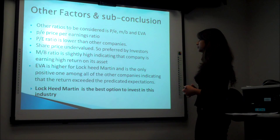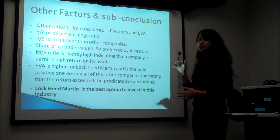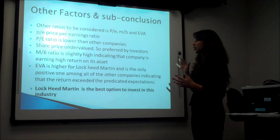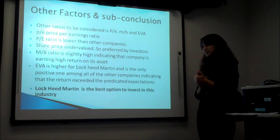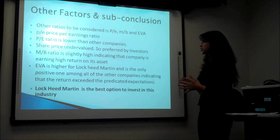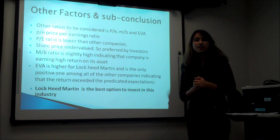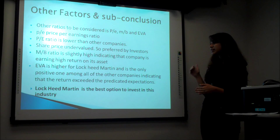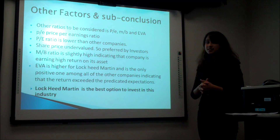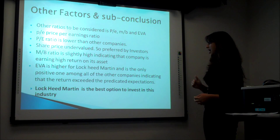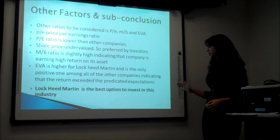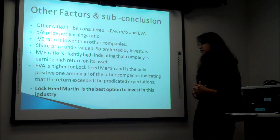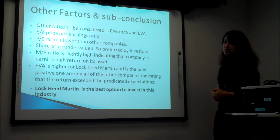There are other ratios that need to be considered while analyzing any company. The first one is the PE ratio — price to earnings ratio — which is lower for Lockheed Martin than any other company, meaning the share prices are undervalued, which is a good thing for investors. The market-to-book ratio is slightly high for Lockheed Martin, indicating the company is earning a high return on its assets. Economic value added for Lockheed Martin is higher and is the only positive among all companies, indicating the return exceeded predicted expectations. Therefore, Lockheed Martin is the best option to invest in among the five companies under this industry.